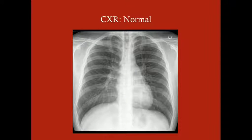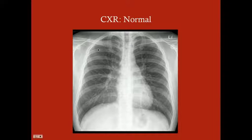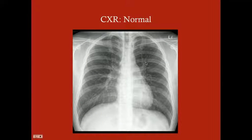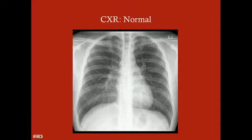Here's a normal chest X-ray. Note that the trachea is not deviated to one side. There's no breakage of the rib bones or clavicles, a normal heart silhouette and aortic shape, and normal pulmonary markings.